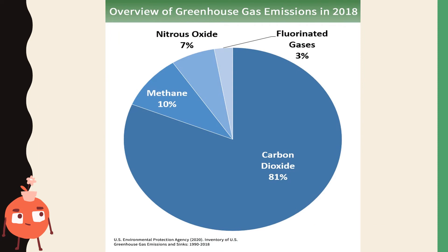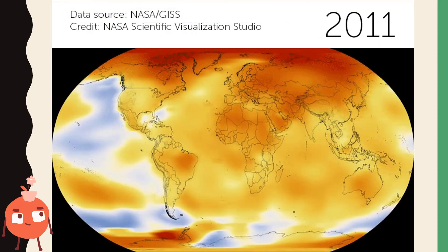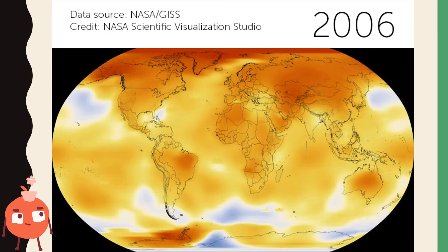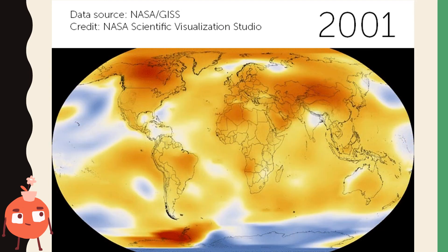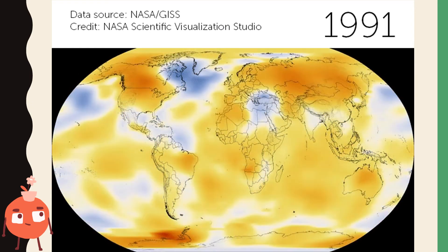In 2018, the United States Environmental Protection Agency reported that carbon dioxide contributes most to global warming with an 81% emission, followed by methane with 10%, nitrous oxide with 7%, and other fluorinated gases with 3%. In the past, when the Earth experienced increases in temperature, it was a result of natural causes. But today, it is being caused by the accumulation of greenhouse gases in the atmosphere produced by human activities.